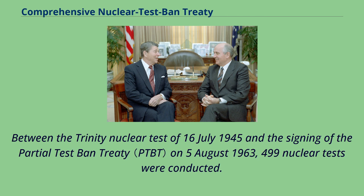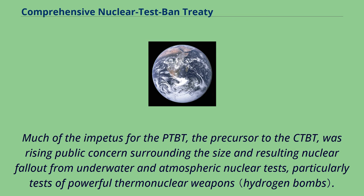Between the Trinity Nuclear Test of July 16, 1945 and the signing of the Partial Test Ban Treaty on August 5, 1963, 499 nuclear tests were conducted. Much of the impetus for the PTBT, the precursor to the CTBT, was rising public concern surrounding the size and resulting nuclear fallout from underwater and atmospheric nuclear tests, particularly tests of powerful thermonuclear weapons.